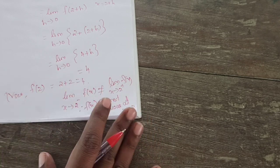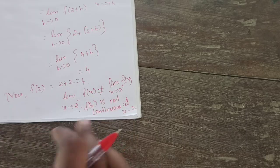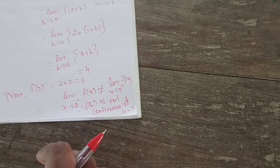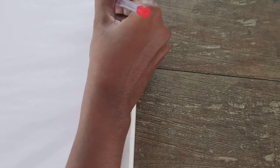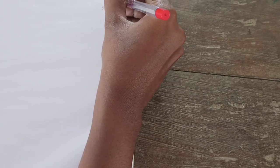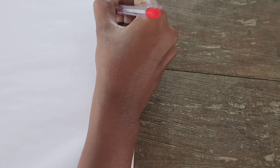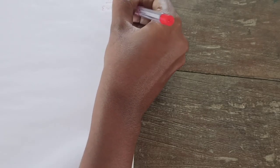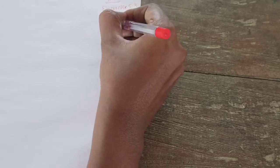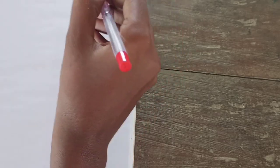If it is continuous, all three values must be equal. But here they are not, so it is not continuous. These are the two problems in this example. In Exercise 5.3, the first problem is your homework — you can try. It has two parts, A and B — both are homework.